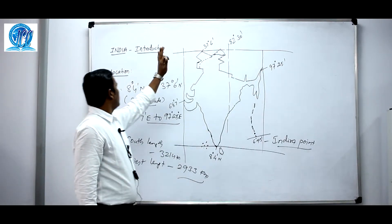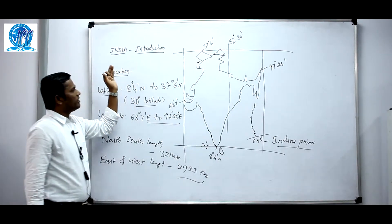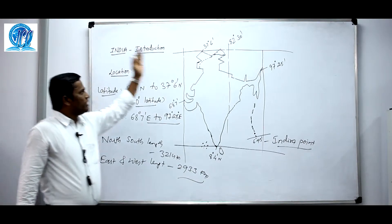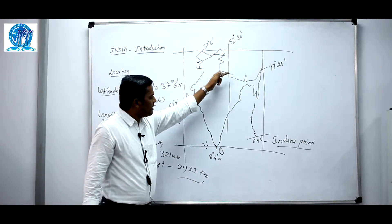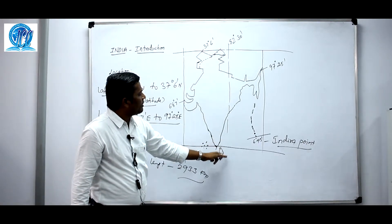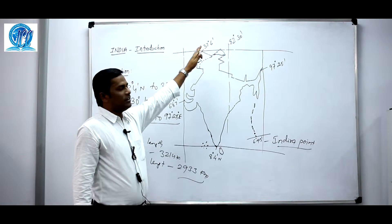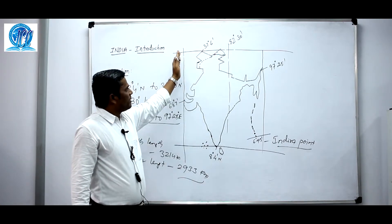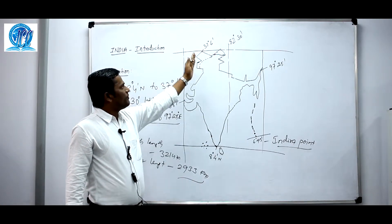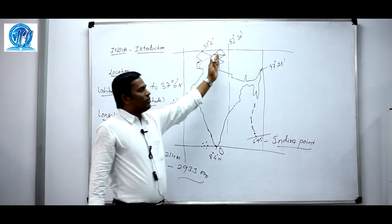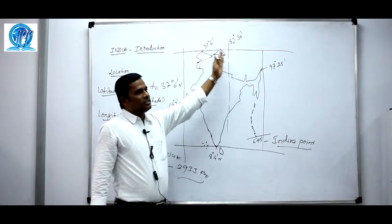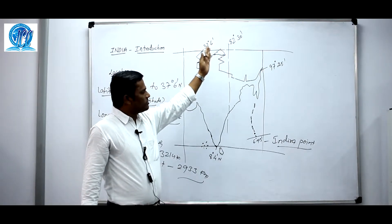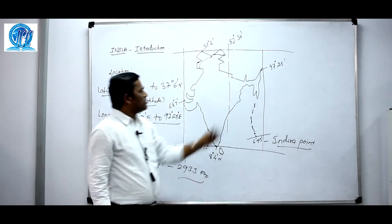The standard meridian of India is 82 and a half degrees east. We are 5 hours and 30 minutes ahead of Greenwich Mean Time. This will be explained in more detail in a later part.